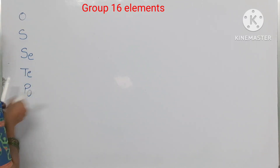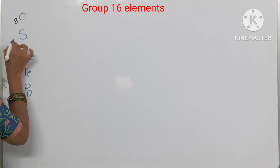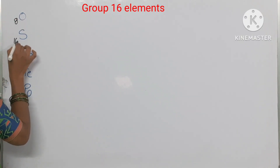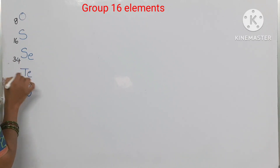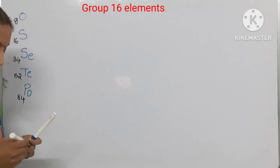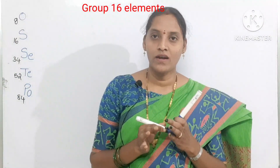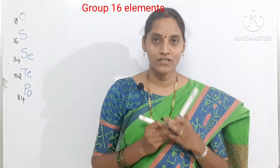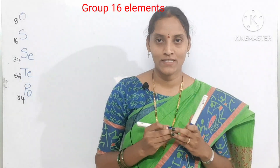Oxygen's atomic number is 8, sulfur's atomic number is 16, selenium is 34, tellurium is 52, and polonium is 84. These are the atomic numbers of the elements present in group 16.